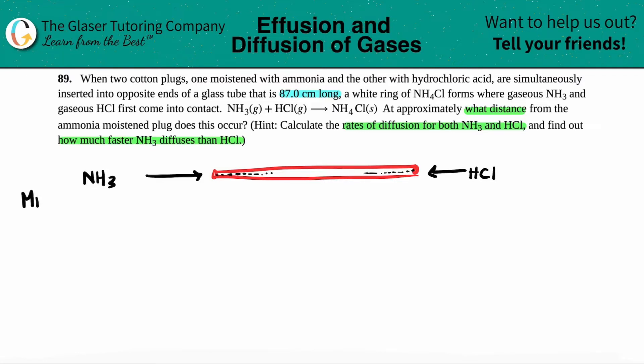I'll look up the molar mass of NH3. I got 14.01 plus 3 times 1.008, and I get a molar mass of 17.034 grams per mole. For HCl, I have 1.008 plus chlorine 35.45, and I get a molar mass of 36.458 grams per mole.